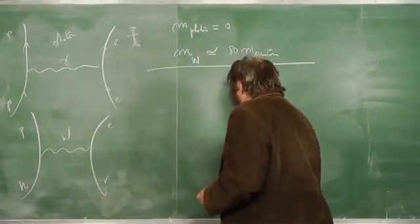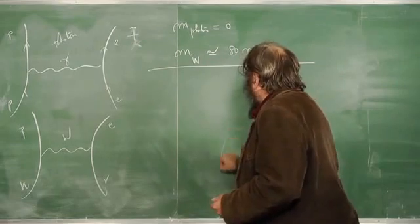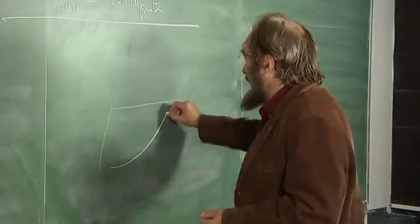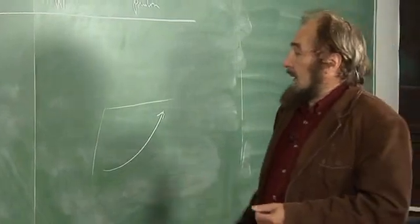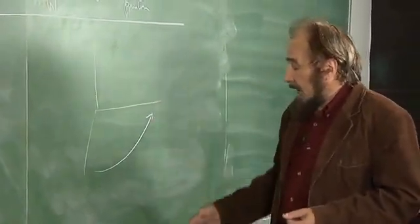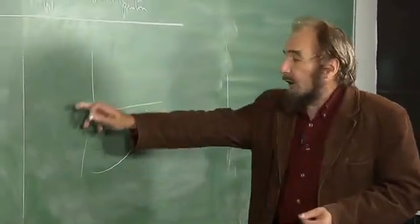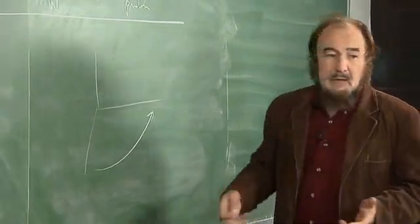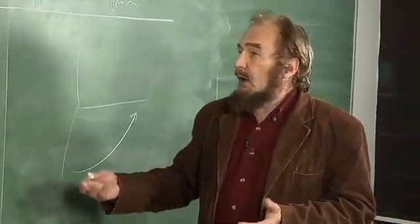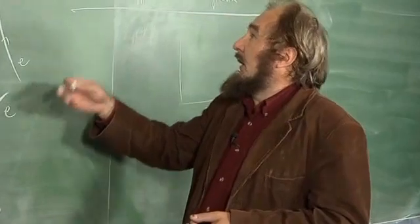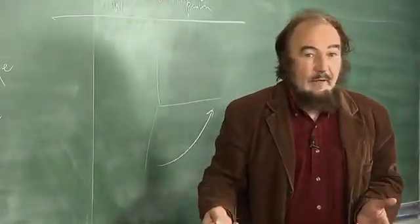For example, let me imagine that we have some very abstract space where we put here all the interactions. We look at this space. This is all the interactions. The idea is that in the beginning of the universe, when it was very hot, all interactions were equivalent. They were probably all long-range interactions without mass.